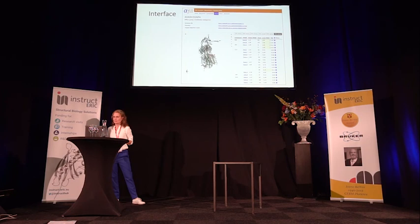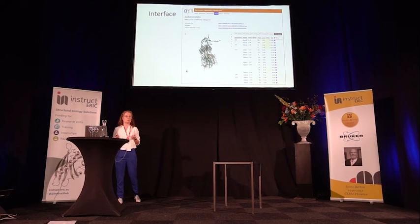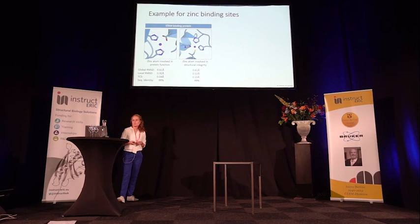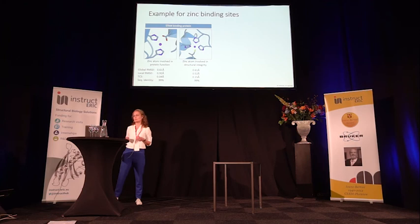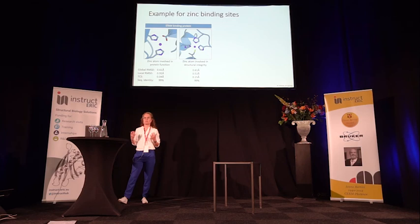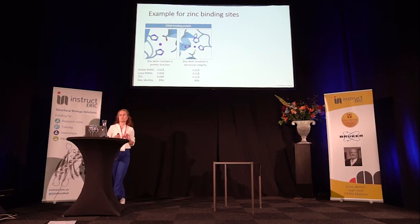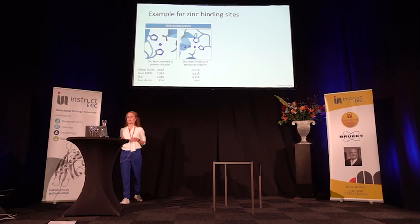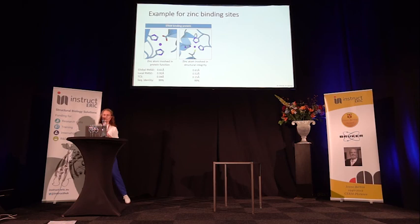Now I'd like to show two examples of binding sites. Here we have a stem binding protein with two zinc atoms transplanted from 99% sequence identity. All quality indicators — both RMSD scores and the clash score — are in the proper region, so this is most likely a good transplant. You can appreciate that the left zinc site looks like one involved in protein function, while the right one is a proper zinc site for structural integrity.